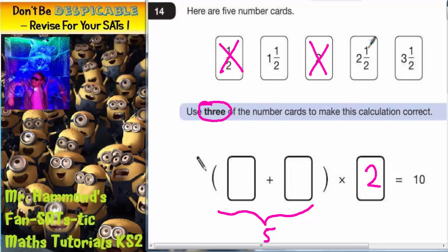So what's the only two that we haven't tried? We haven't tried one and a half with three and a half. So if we try those two what are we going to get?